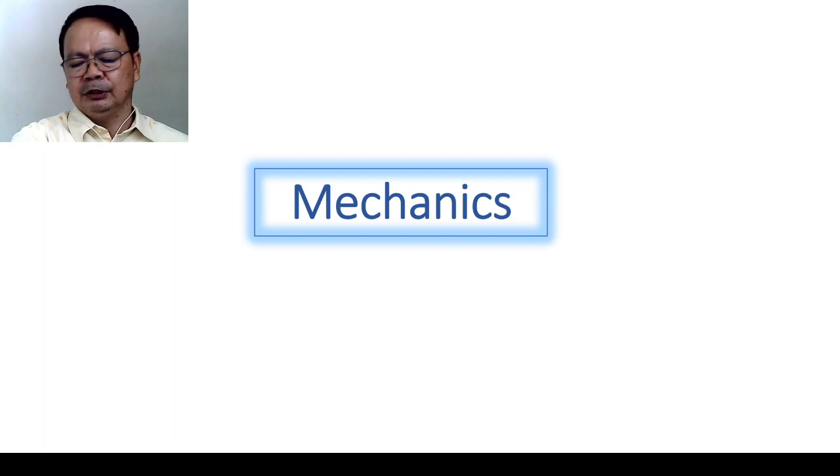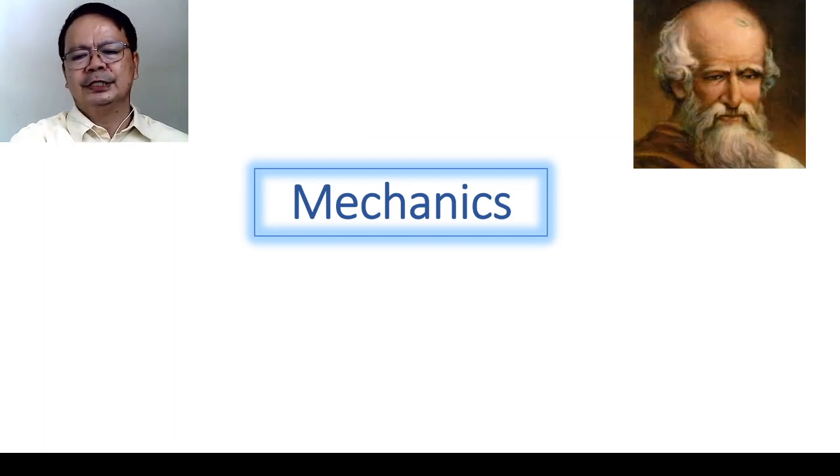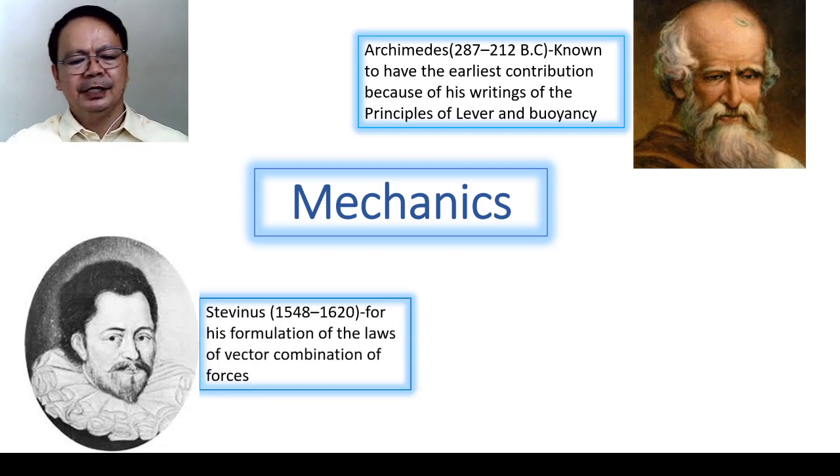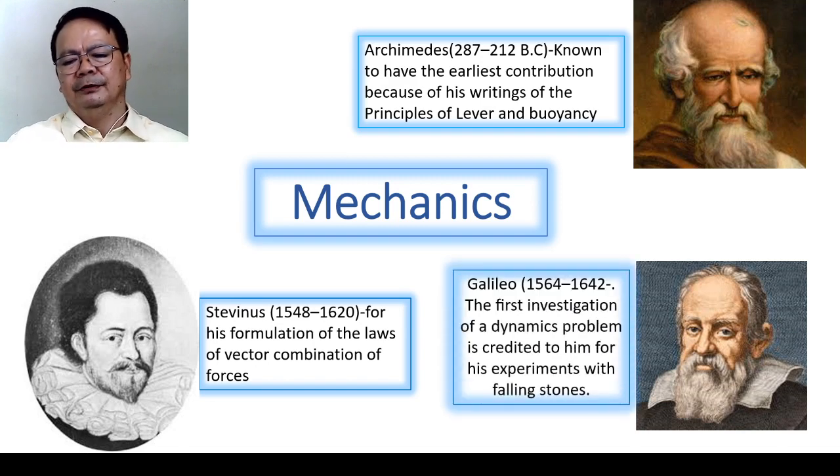Mechanics would not be possible and would not be easy if not for the contribution of the following persons. The first is Archimedes, who is very well known for his principle in buoyancy. He is the first to have the earliest contribution because of his writing of the principle of the lever and that of buoyancy. The other one, we also have Stevin. Stevin is very popular with his formulations of the law of vector combination of forces. Next, we have Galileo. The first investigation of a dynamics problem is credited to him for his experiments with falling bodies.